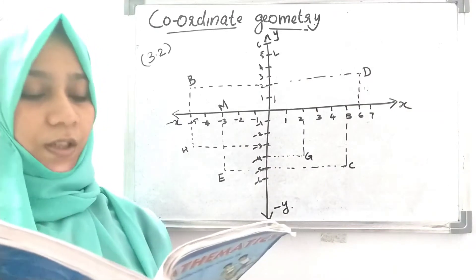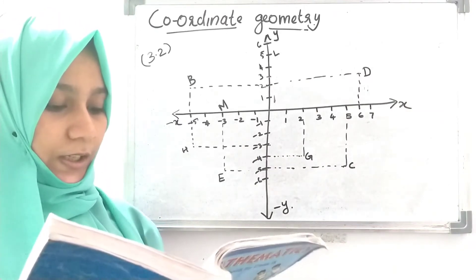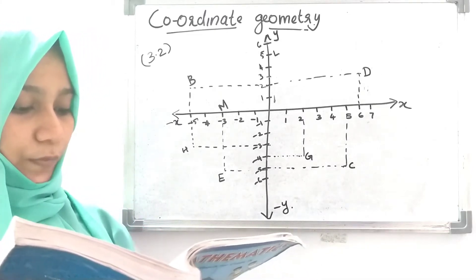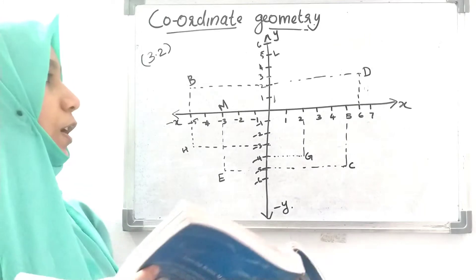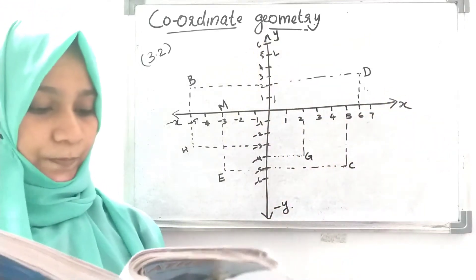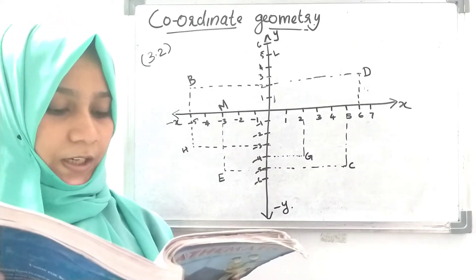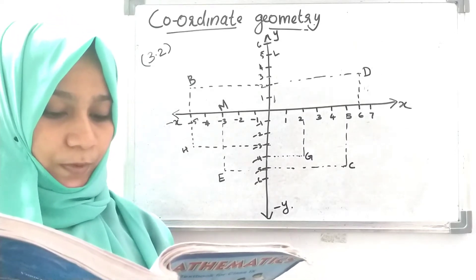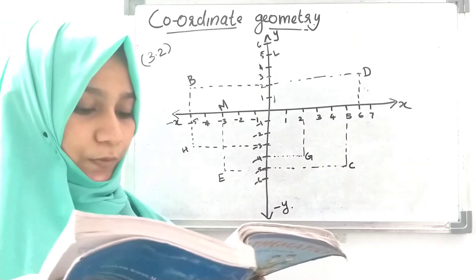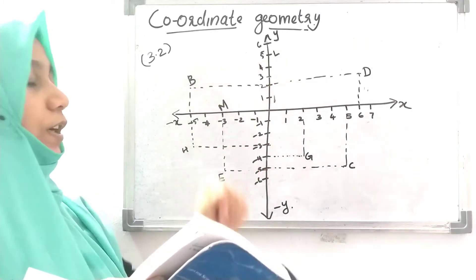The first question is: answer each of the following. What is the name of the horizontal and vertical lines drawn to determine the position of any point in the Cartesian plane? The horizontal line is the x-axis and the vertical line is the y-axis. What is the name of each part of the plane formed by these two lines? Quadrant. Write the name of the point where these two lines intersect. The point is called the origin.